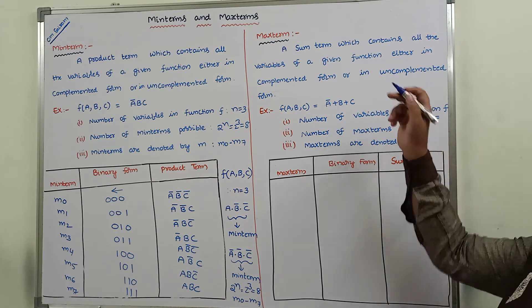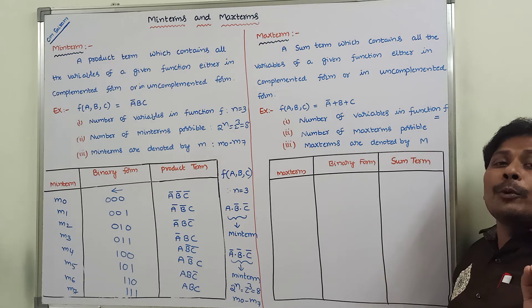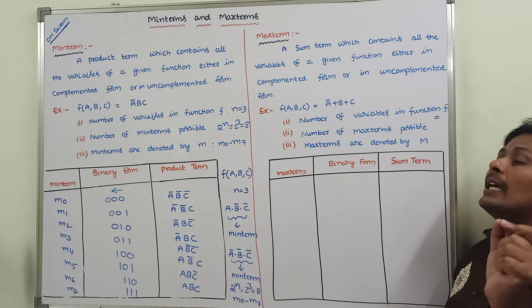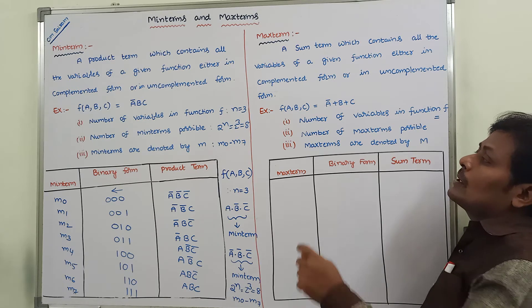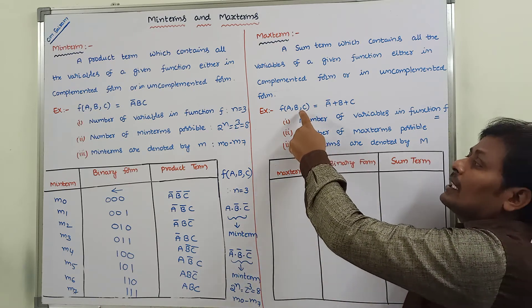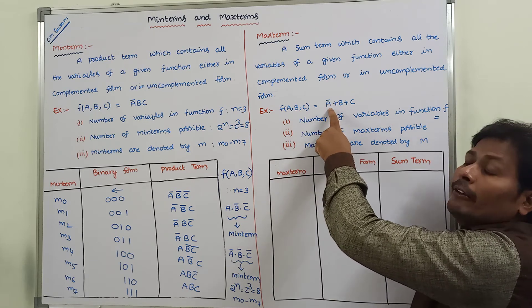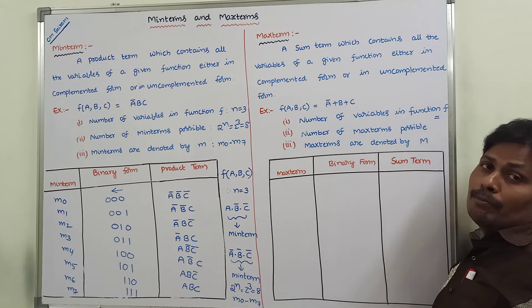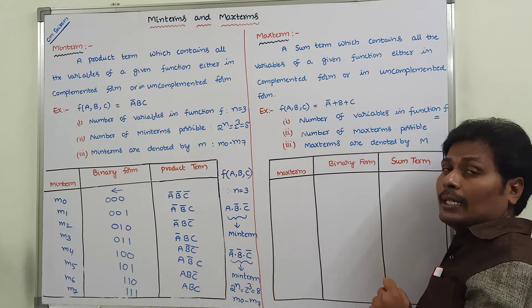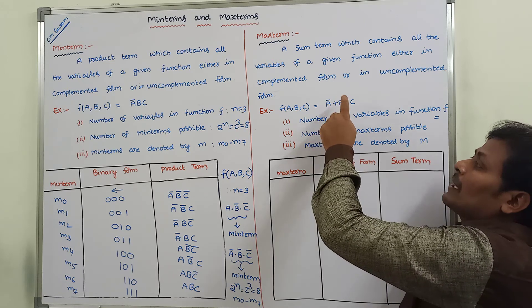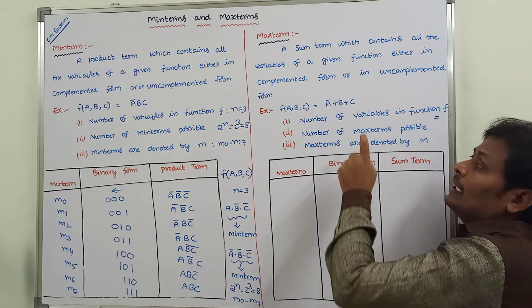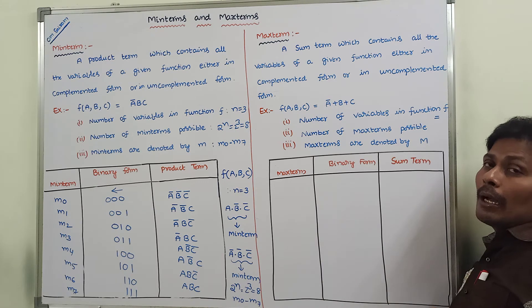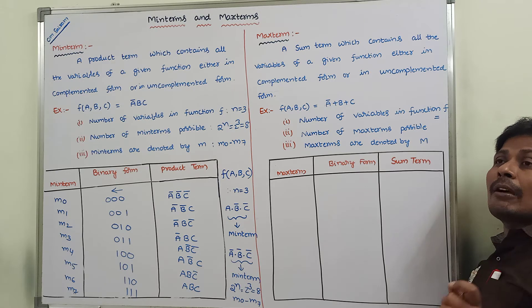Now we can go to the max term. A max term contains only sum terms. A sum term which contains all the variables of a given function, either in complemented form or in uncomplemented form. For example, f(a, b, c) has 3 variables. Taking ā plus b plus c — this is a sum term where variable a is complemented, b and c are taken directly. So ā + b + c is called a sum term.